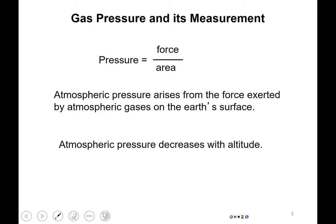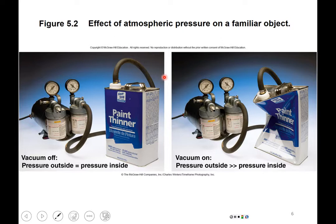There's something called atmospheric pressure, arising from the force that the atmosphere presses down on the surface of the earth. We have this whole atmosphere of gas pressing down on each of us. Atmospheric pressure decreases with altitude because as you go up, you have less of the atmosphere above you pressing down. A paint thinner container is shown: when a vacuum pump sucks the air out of it, the container is crushed.